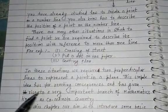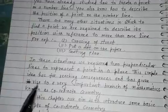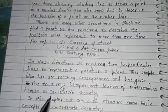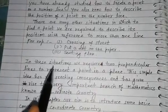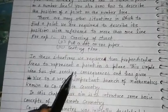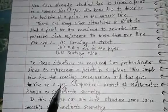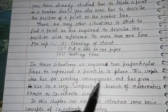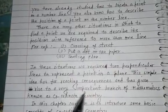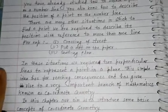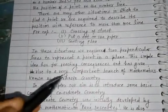This simple idea has far-reaching consequences and has given rise to a very important branch of mathematics known as coordinate geometry. Here, in situations where we need to place a point, we require two perpendicular lines. These consequences are handled with the help of this branch of mathematics, which is called coordinate geometry.